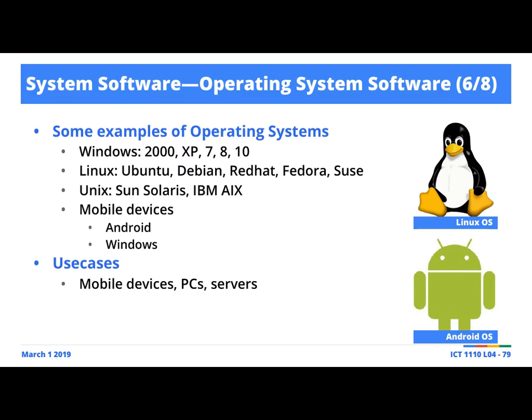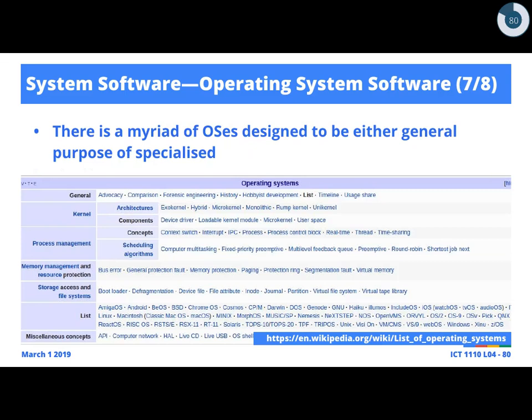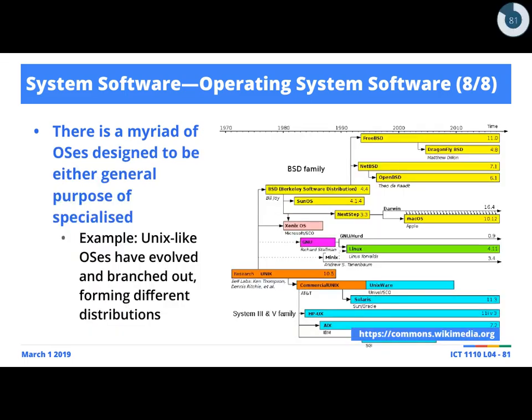The takeaway point is: one of the reasons why we have these different operating systems is the same reason we have a whole host of application software — because they're meant to perform different types of tasks. There's a Wikipedia link you might find useful that gives you a sense of just how many operating systems are out there. I want to zero in on Unix-like operating systems — you can see how these operating systems have evolved over the years on different branches. The Mac OS from Apple is actually a Unix-like operating system.